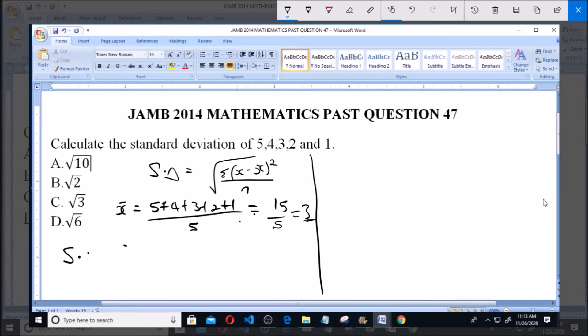So standard deviation SD is equal to the square root of the sum of 5 minus the mean 3 squared, plus 4 minus 3 squared, plus 3 minus 3 squared, plus 2 minus 3 squared, plus 1 minus 3 squared.